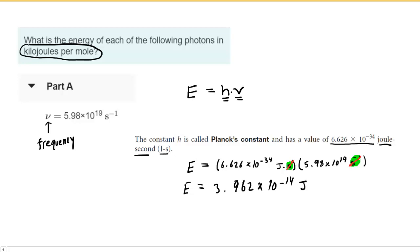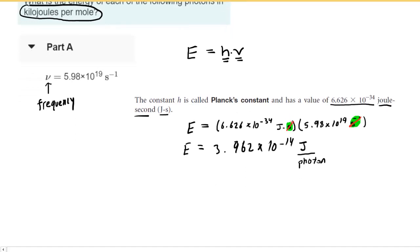But that's not the answer, because the question wants kilojoules per mole of photons. This is only joules per single photon. This is not a mole of photons, this is just one photon. So we actually have to do a little bit of a conversion here. We're going to have to set up a couple of conversion factors.